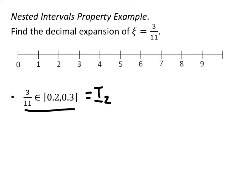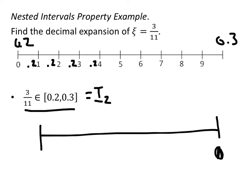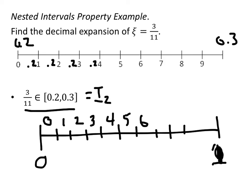Now I'm going to take this interval — not as 0 to 1, but as this new interval. So this is actually 0.2 here and 0.3 here, which means this is 0.21, this is 0.22, 0.23, 0.24, and so on. What we've essentially done is taken our original interval from 0 to 1, broken it up into 10 pieces. This is interval 0, this is interval 1, this is interval 2, this is interval 3 and 4, and so on. If my number lands in a particular interval, that's going to be the decimal digit for my expansion. So 3 elevenths is going to start off 0.2.